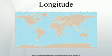For calculations, the west-east suffix is replaced by a negative sign in the western hemisphere. Confusingly, the convention of negative for east is also sometimes seen. The preferred convention, that east be positive, is consistent with a right-handed Cartesian coordinate system with the north pole up. A specific longitude may then be combined with a specific latitude, usually positive in the northern hemisphere, to give a precise position on the Earth's surface. Longitude at a point may be determined by calculating the time difference between that at its location and Coordinated Universal Time. Since there are 24 hours in a day and 360 degrees in a circle, the Sun moves across the sky at a rate of 15 degrees per hour, so if the time zone a person is in is 3 hours ahead of UTC, then that person is near 45° longitude.